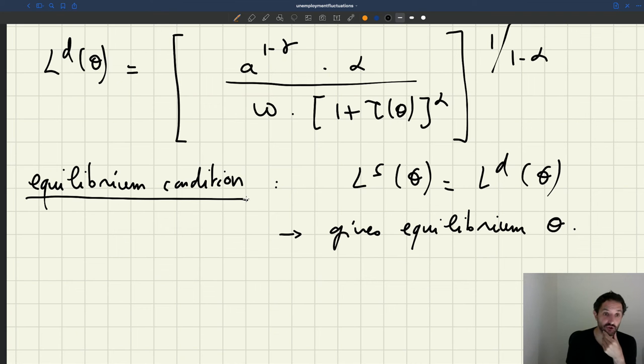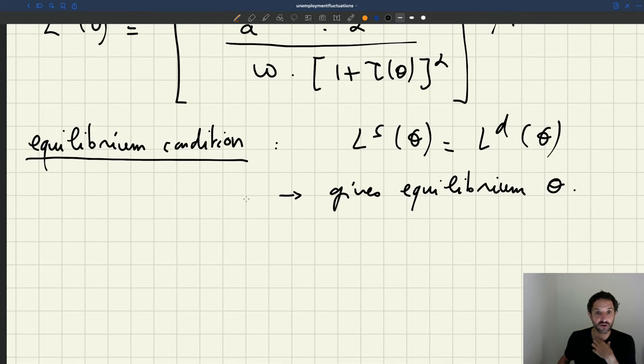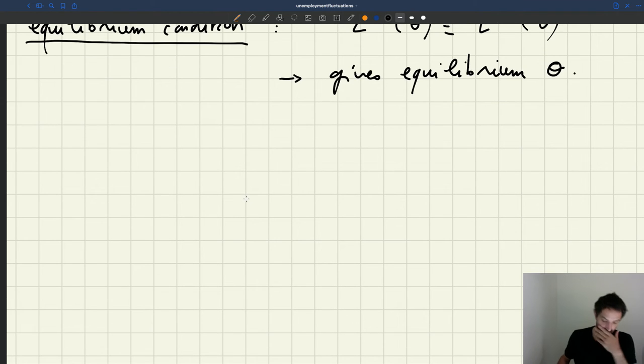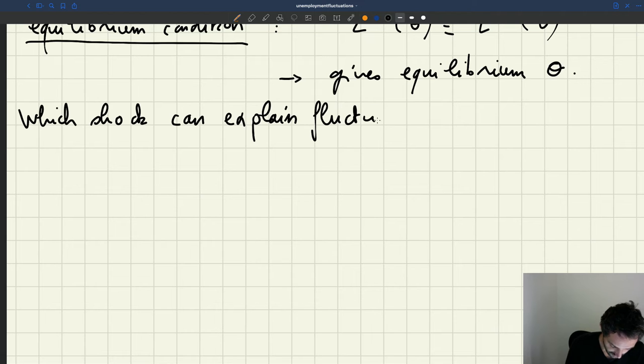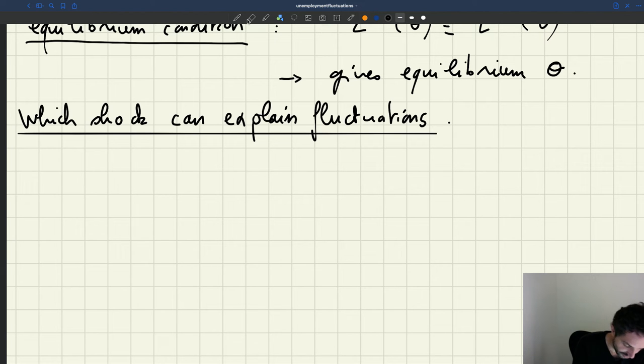What are the types of shocks that can explain what we see in the data? That's going to be the first thing that we have to investigate. So which shock can explain the labor market fluctuation? That's going to be our first question.